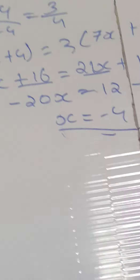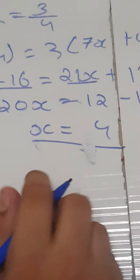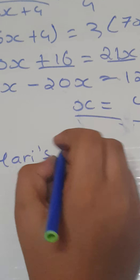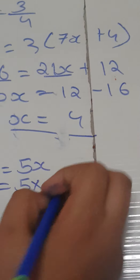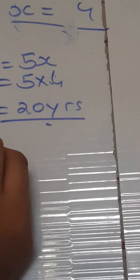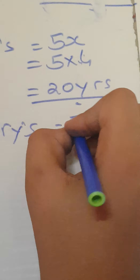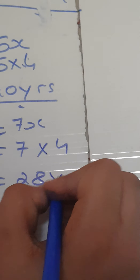The first Harry's age is 5x. In the question they said Harry's age is 5x, which equals 5 multiplied by x. The x value is 4, so Harry's age is 20. Harry's age will be 7x, which is 7 multiplied by 4, which is 28 years. This is our answer.